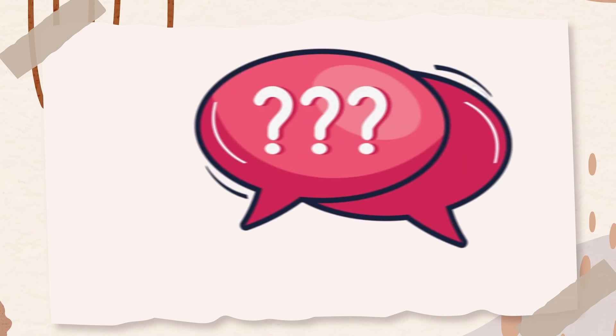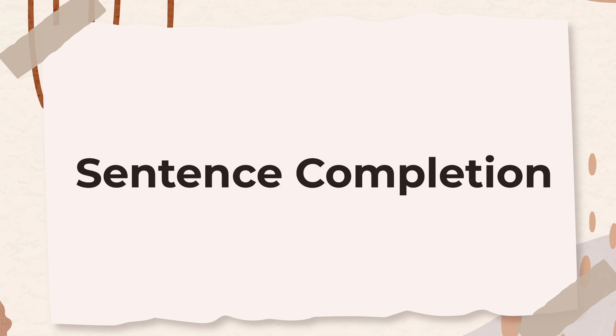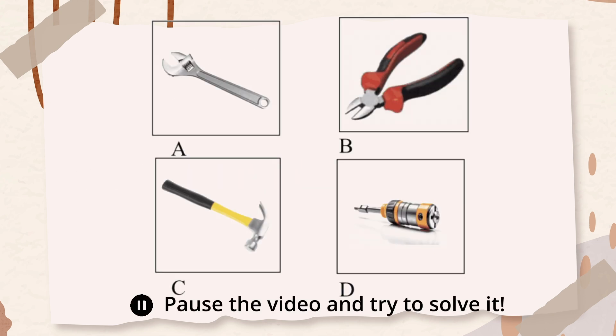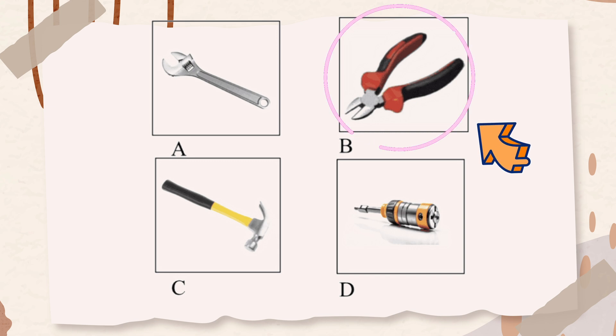The next subtest we'll cover is sentence completion. In this question, you need to choose the picture from the answer choices that best completes the sentence or best follows the instructions. To fix the bike, Sarah used a hammer, a wrench, and a screwdriver. Choose the tool that Sarah did not use. Pliers were not mentioned in the tools Sarah used to fix the bike. Therefore, the correct answer is option B.